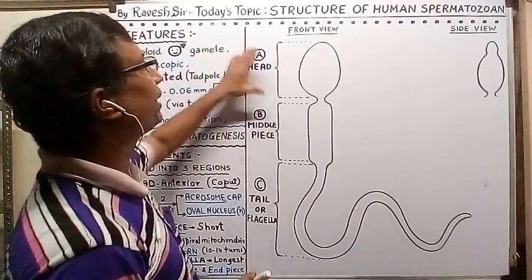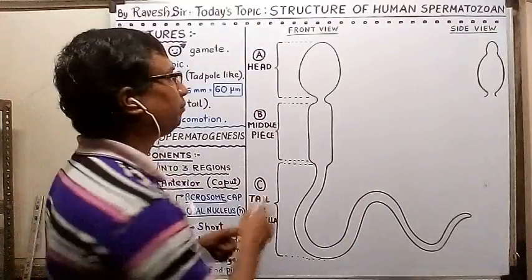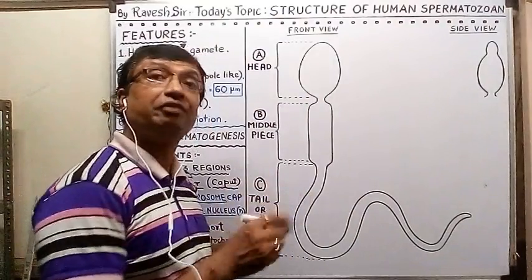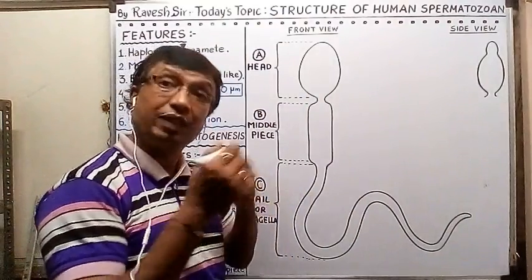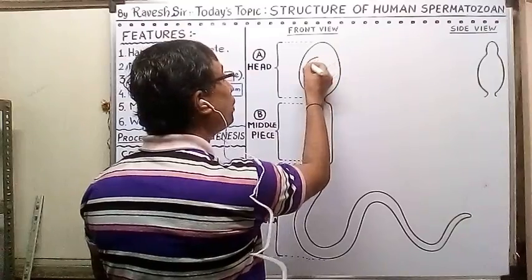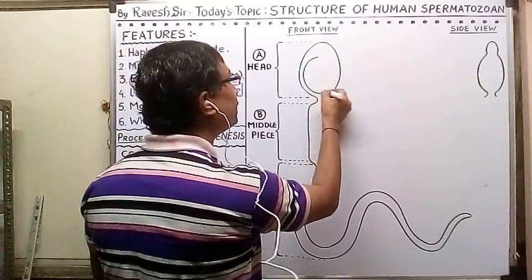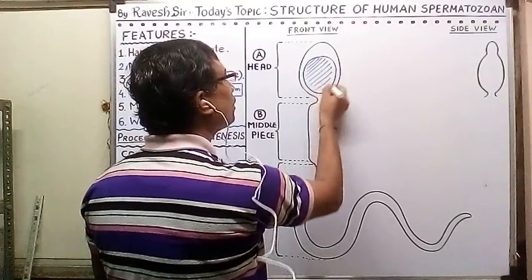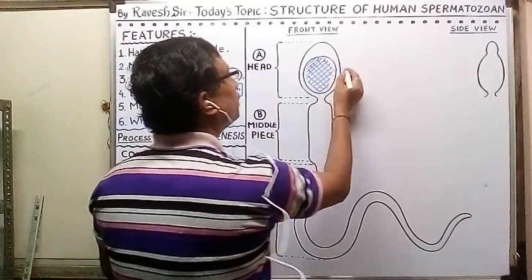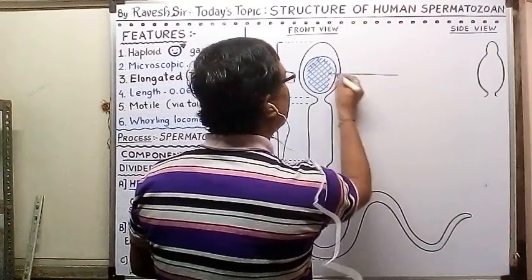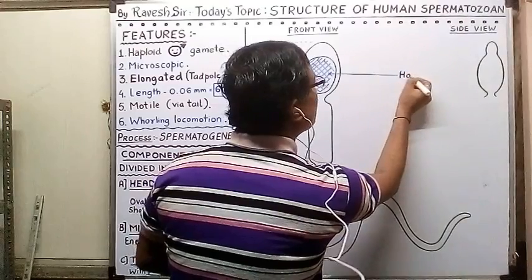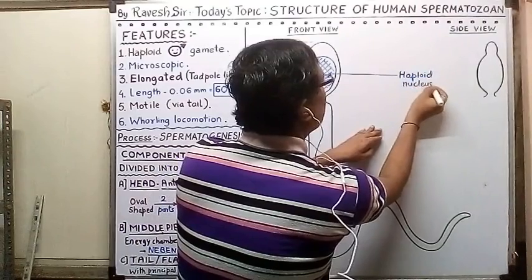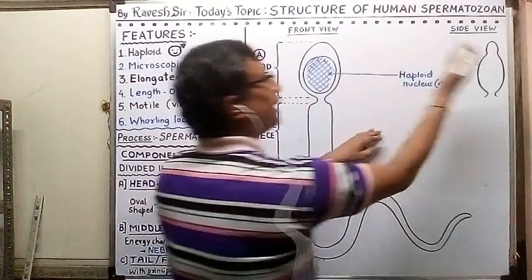Now, the head has the most important structure — the nucleus. Just as the female egg has a nucleus, the sperm has an oval nucleus which is highly condensed. This represents the haploid nucleus in the n-state.